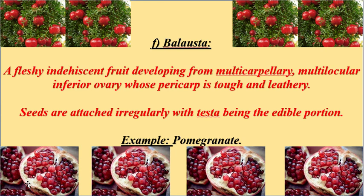The sixth type is balusta. This is an indehiscent fruit, meaning the fruit will not separate or divide after maturation, so the seeds will not disperse. It is formed from a multicarpellary, multilocular, inferior ovary where the pericarp is tough and leathery. The seeds are attached irregularly to the testa and form the edible portion. Example: pomegranate.